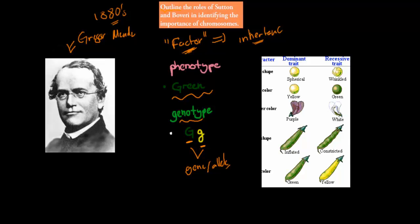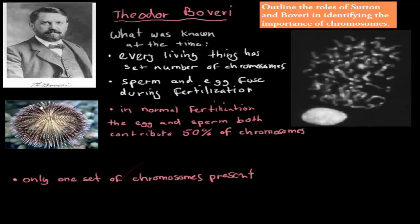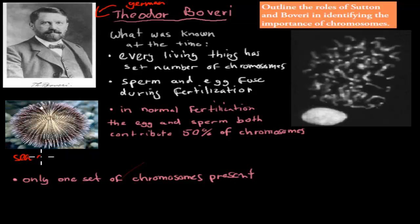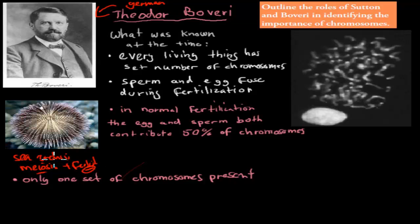First, we have Theodor Boveri, a German scientist who experimented with sea urchins. He looked at their cell division — specifically meiosis, when gametes are formed — and also fertilization, when the egg and sperm came together. His main focus was fertilization and what happened during it. He did his experiments in the early 1900s, around 1902.